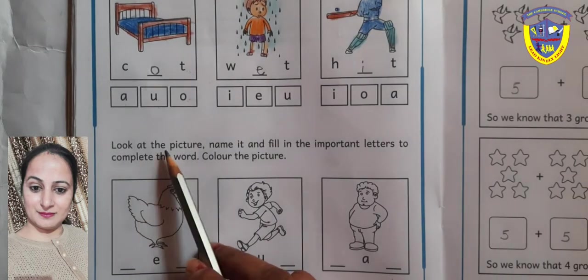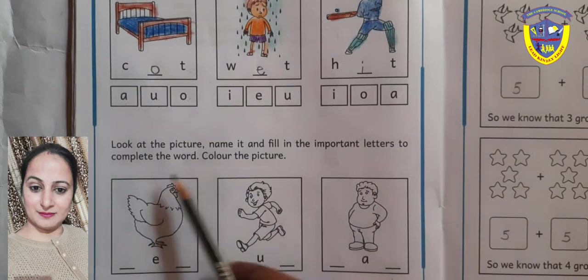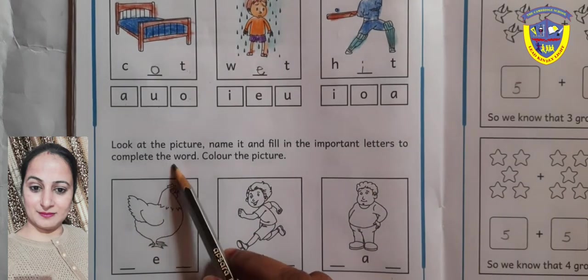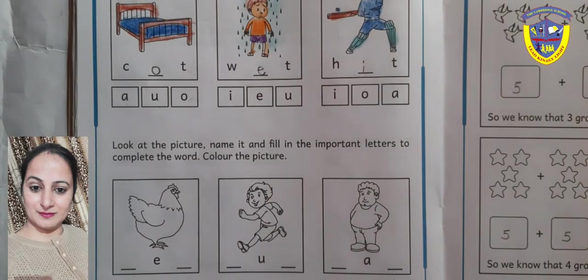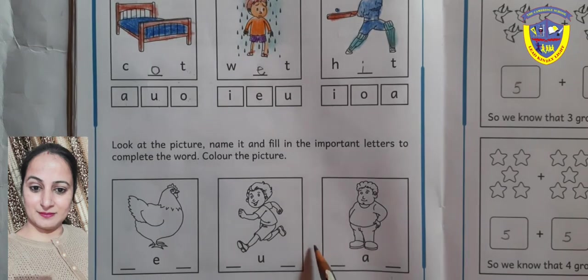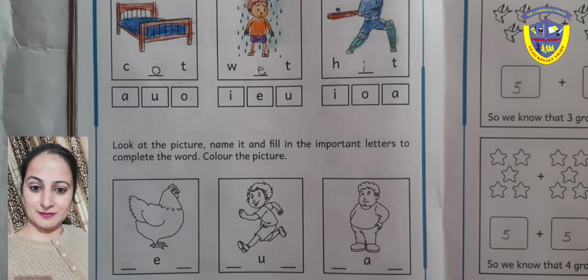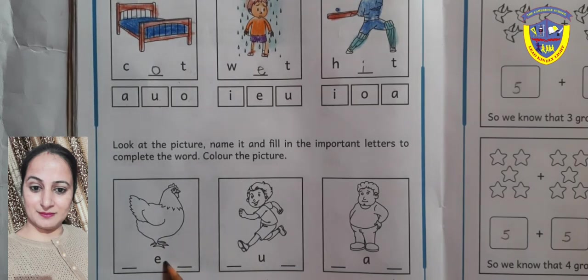Next, look at the picture, name it, and fill in the important letters to complete the word. After that, color the picture. Students, here we write magic letters, but in these pictures we will write important letters. First, identify the picture — this is 'hen'.